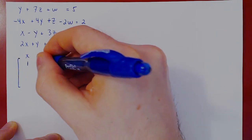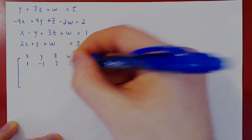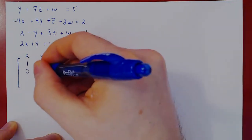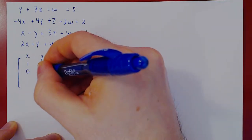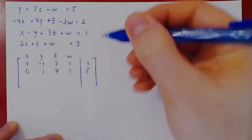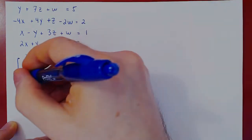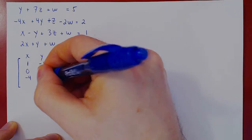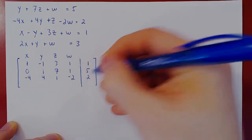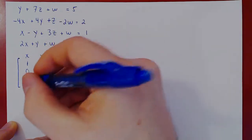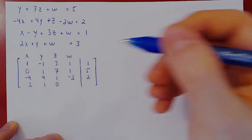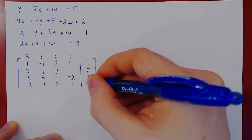So row three: 1, negative 1, 3, 1, 1. Now row one: 0, 1, 7, 1, 5. Row two: negative 4, 4, 1, negative 2, 2. And finally row four: 2, 1, 0 (as there is no z), 1, and 3.